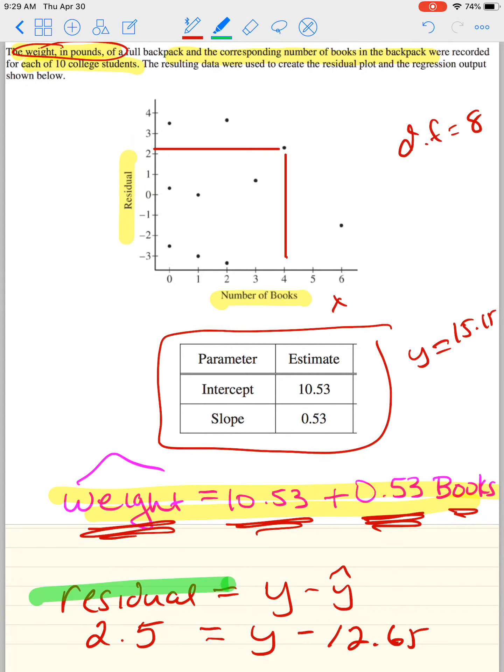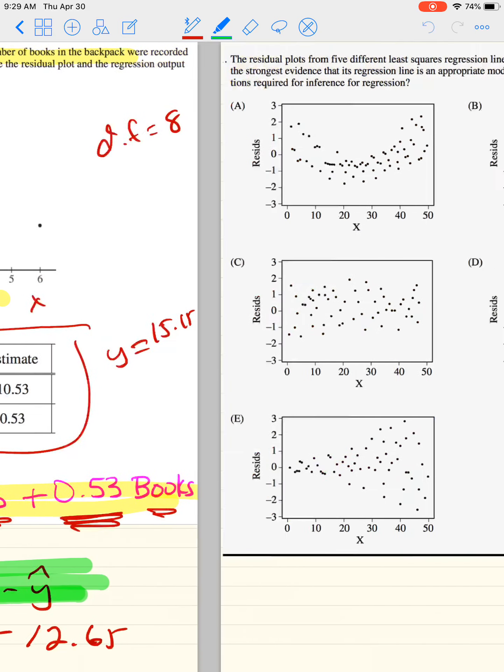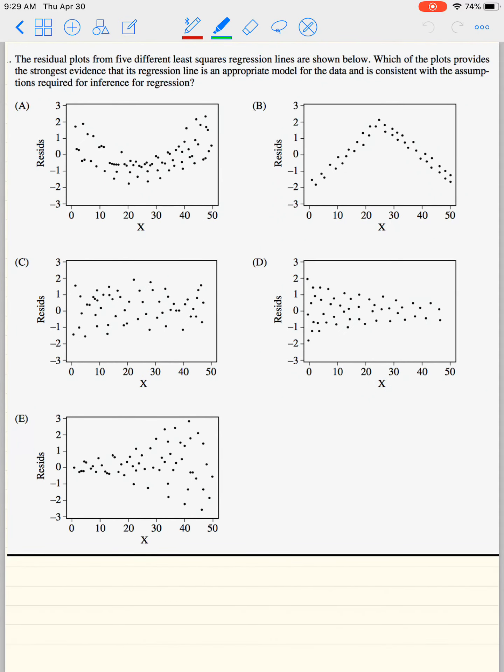We're going to finish the video with one last question. And earlier in the video, I said residual graphs are really important because they show whether linear or nonlinear models should be used. Well, how do we know which one? So these are all residual graphs. And if a residual graph shows no type of pattern, then a linear model should be used. So this says, which of the plots provides the strongest evidence that a regression line is appropriate? Well, that's going to be this guy right here because this guy has no pattern. He has a pattern, he has a pattern, he has a pattern, and then he has a pattern. This guy is the best.